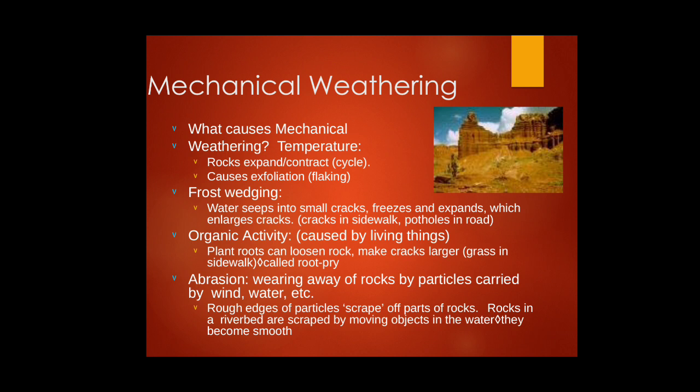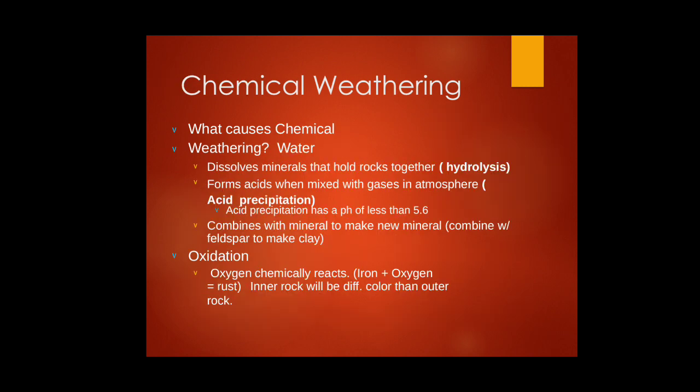Next comes chemical weathering. Water is the major component. The first process is hydrolysis, where water mixes with minerals in rocks and turns them to liquid form, carrying them away. Next is acid precipitation — weak acids form when water mixes with atmospheric gases. For example, carbon dioxide combining with water forms carbonic acid. If the pH is less than 5.6, it acts as a major component in creating chemical weathering of rocks.